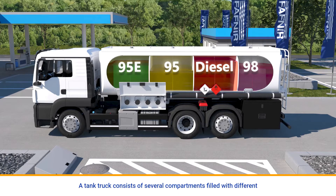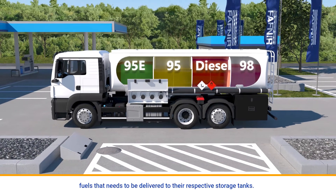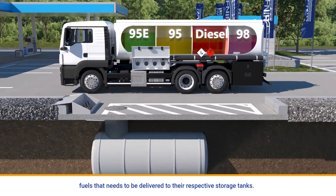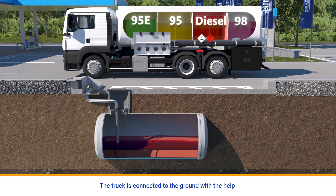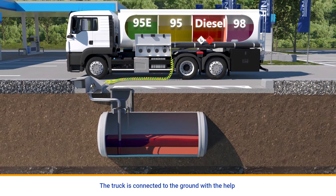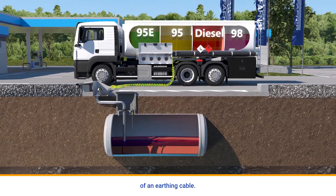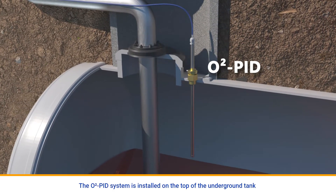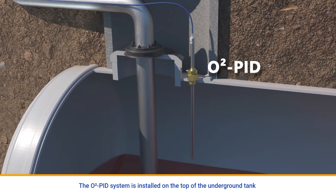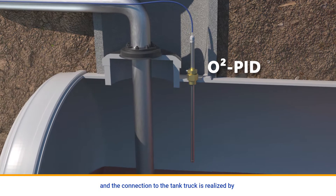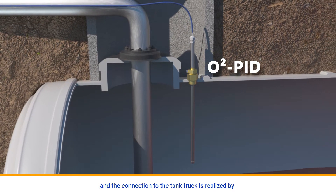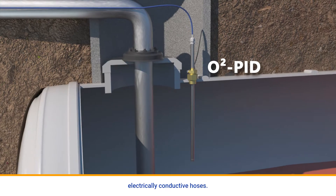A tank truck consists of several compartments filled with different fuels that need to be delivered to their respective storage tanks. The truck is connected to the ground with the help of an earthing cable. The O2PID system is installed on the top of the underground tank, and the connection to the tank truck is realized by electrically conductive hoses.